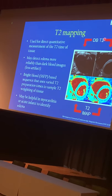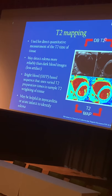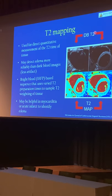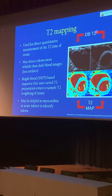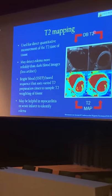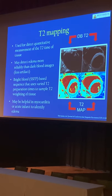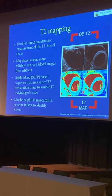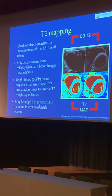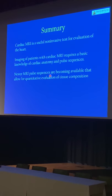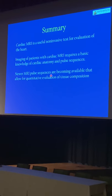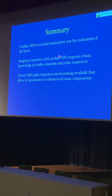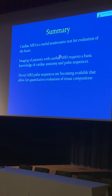You can also quantify the amount of edema through T2 mapping. These tend to be more reliable than just looking at the dark blood images because they are less artifact-prone. These are bright blood sequences that use varied T2 preparation times to sample the T2 weighting of the tissues. T2 mapping may be helpful in myocarditis or acute infarct to identify the presence of edema. When they come on, they come in color, so this T2 mapping is also nice in that regard. In summary, cardiac MRI is a useful non-invasive test for evaluation of the heart. Imaging of patients with cardiac MRI requires a basic knowledge of cardiac anatomy and pulse sequences, and newer MRI sequences are becoming available that allow for quantitative evaluation of tissue composition.